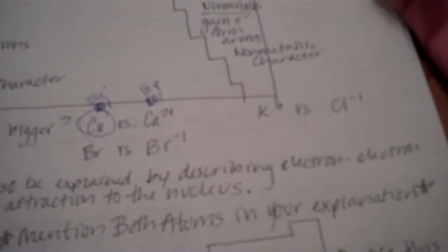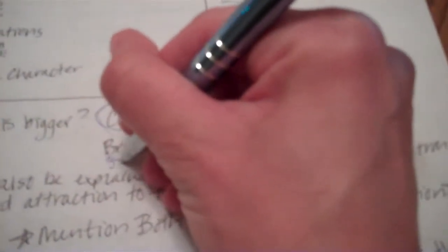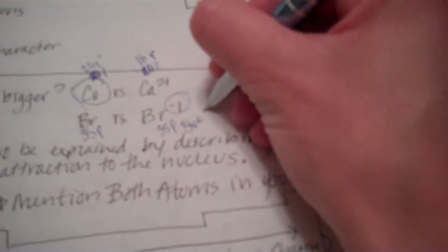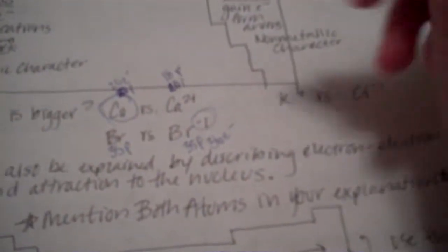And figure it out from there. All right. So, let's go with Br. So, Br has, let's not mess it up this time. 35 protons, 35 protons. Negative 1 means you add, so you have 36 electrons. The one that's bigger, since they both have the same number of protons, the one that's bigger will have more electrons.